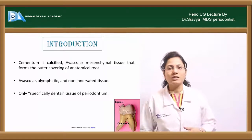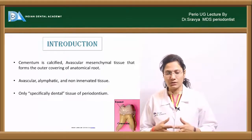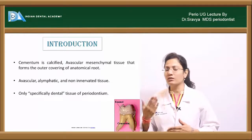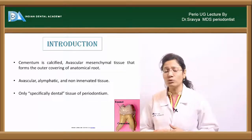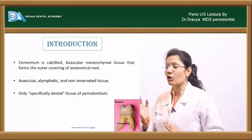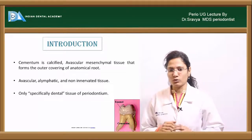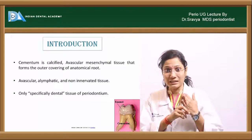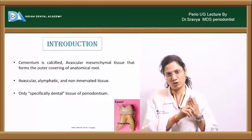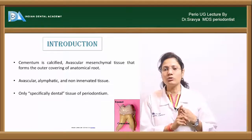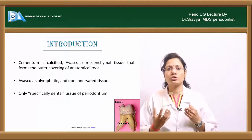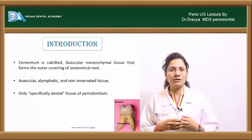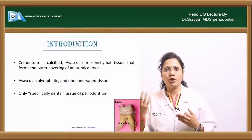Cementum is an avascular, highly calcified mesenchymal tissue that forms the outer covering of the anatomical root. Cementum is avascular and calcified. Mesenchymal tissue is tissue which originates from the mesoderm, because it is a part of connective tissue — so cementum is a form of connective tissue.